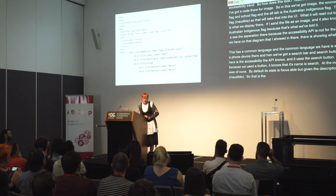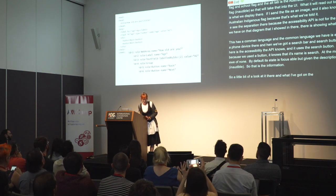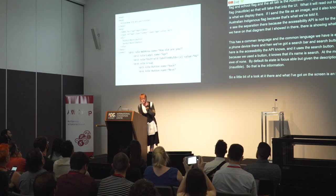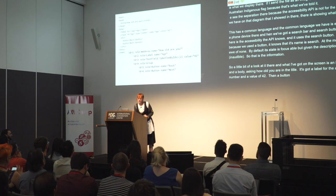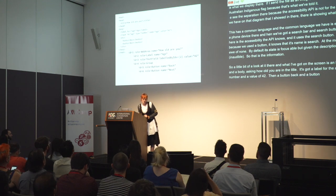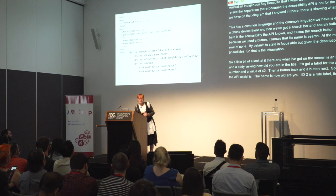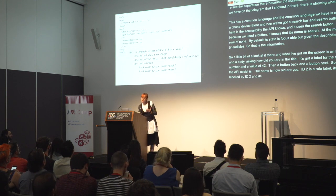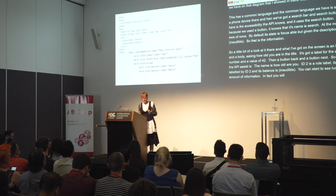On the screen I've got an HTML document showing a header and a body. It's asking 'how old are you' in the title, it's got a label for age and an input for age with a value of 42, and buttons for back and next. Underneath we can see roughly what the accessibility API sees: ID1, role is 'web area', name is 'how old are you'; ID2, role 'label', name 'age'; ID3, role 'text field', labelled by ID2, value is 42. The accessibility API is quite a smaller document than the DOM — it's a subset with information removed.